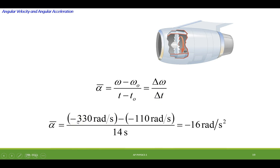We take the final speed minus the initial speed divided by the time, and we come up with an angular acceleration of -16 radians per second squared.